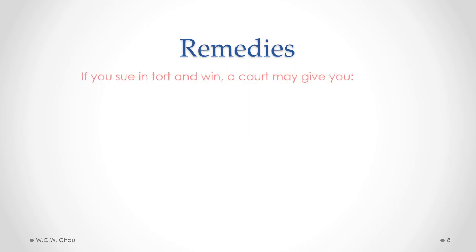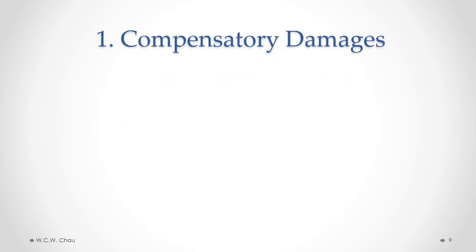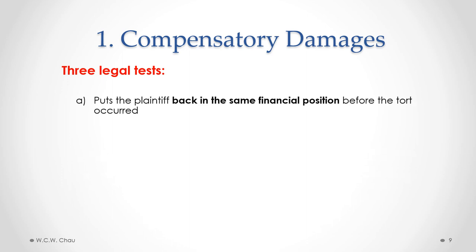Now let's talk about remedies. If you sue in tort and win, a court may give you one of four different remedies: compensatory damages, punitive damages, nominal damages, and injunction. The first type is compensatory damages, where the court orders the defendant to pay money to the plaintiff to compensate for losses or injuries suffered from the tort. There are three legal tests applied to determine compensatory damages. The first is that the amount should put the plaintiff back in the same financial position as if the tort had not occurred.